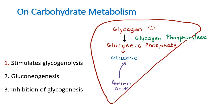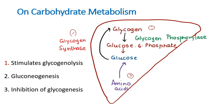The second action is that glucagon increases the amino acid level and converts them into glucose — this is known as gluconeogenesis. The third action involves the enzyme glycogen synthase, which would normally convert glucose to glycogen. Glucagon inhibits glycogen synthase, resulting in inhibition of glycogenesis.